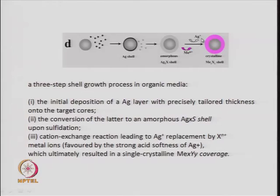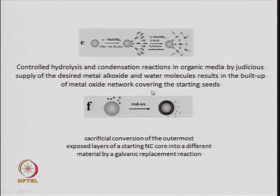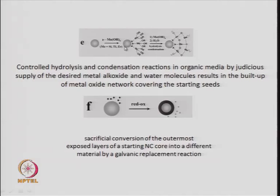In the three-step process, the silver ion is removed by cation exchange, yielding a sulfide shell on top of the core. Another approach is controlled hydrolysis and condensation in organic medium: a metal alkoxide — silicon, titanium, or zirconium — is supplied and builds up on the core particle, followed by hydrolysis and then condensation to form the shell.